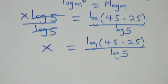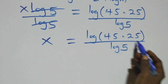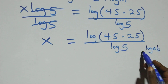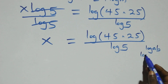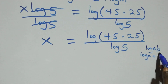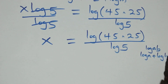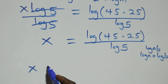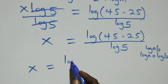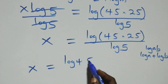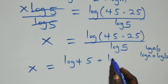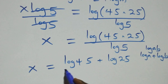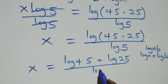The next step follows the law of logarithms: when we have log a times b, this is the same thing as log a plus log b. Applying this, it becomes x equals to log 45 plus log 25, all over log 5.